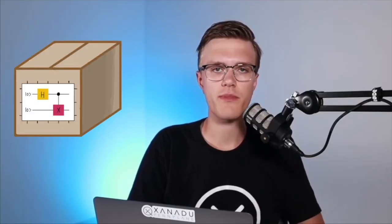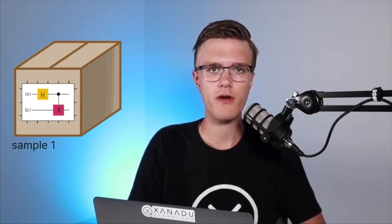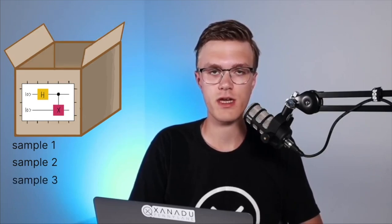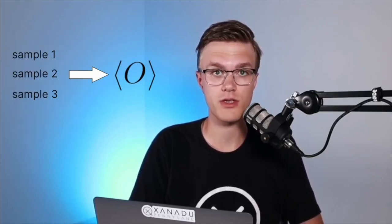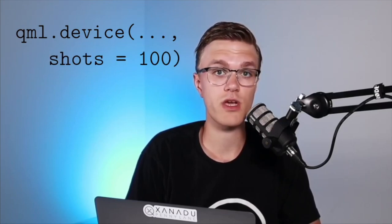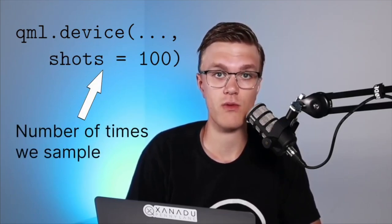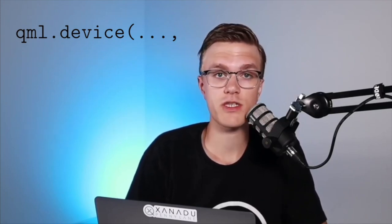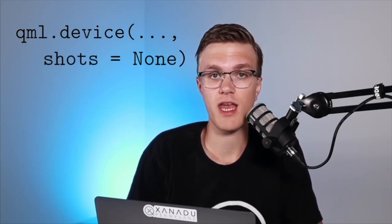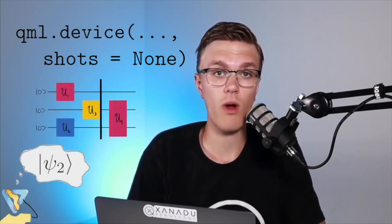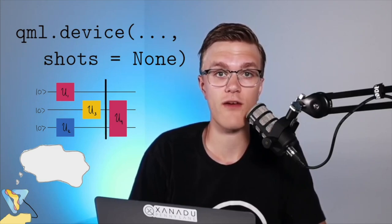With real devices, we have to sample or query them, where the number of queries or samples defines the number of times we need to evaluate our circuit in order to estimate the desired quantity. To take this into account in PennyLane, when defining a device, we can specify the number of times — which we call shots — that we want to evaluate the circuit. In our earlier example, we didn't specify shots at all, indicating that we were carrying on with full knowledge of the quantum state of every qubit at every point in the computation.